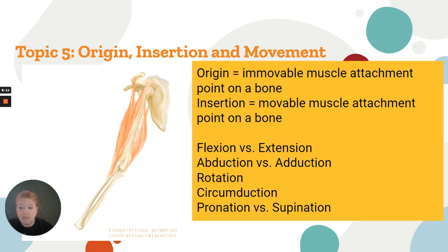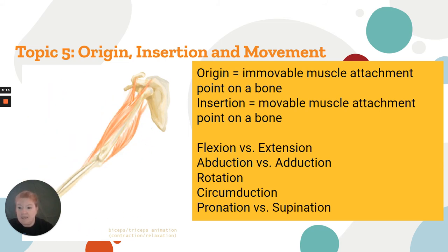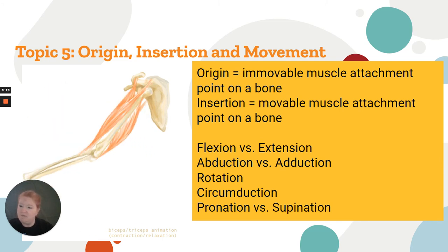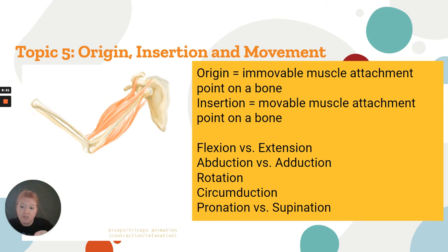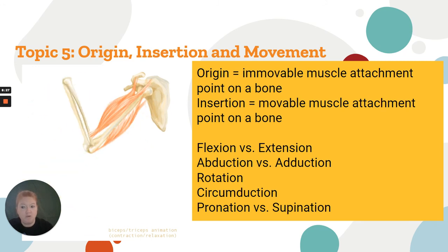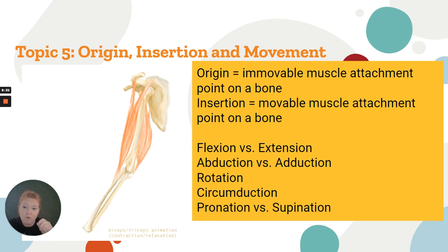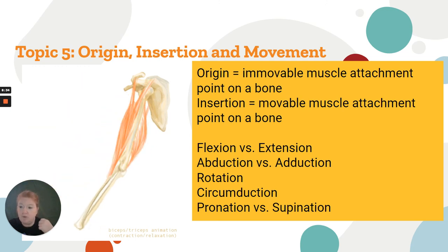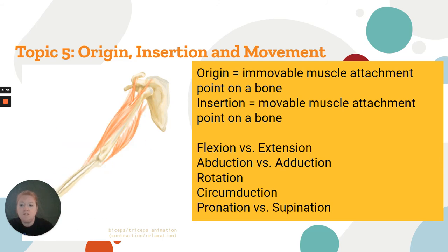We talked about origin and insertion, which we also covered with skeletal muscle rules. The origin is immovable — where it all starts. The insertion is the movable attachment point. Skeletal muscles, with a few exceptions, have two attachment points. The origin is immovable; the insertion — think: insertion requires movement — is the movable part.